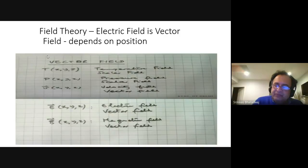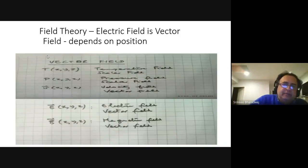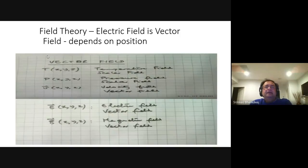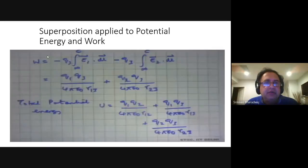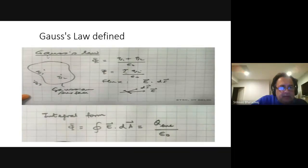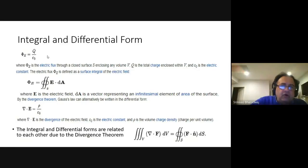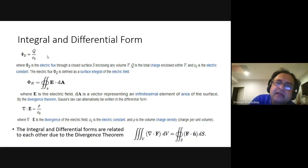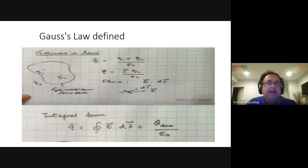We used Gauss's law: the closed integral of E·dA equals Q/ε. Gauss's law can be written in two forms — the integral form: ∮E·dA = Q/ε, and the differential form: ∇·E = ρ/ε₀. Del dot E equals rho by epsilon naught is the partial differential equation used to describe Gauss's law.